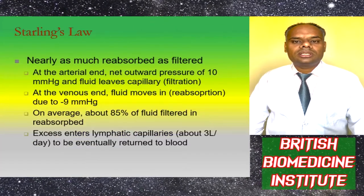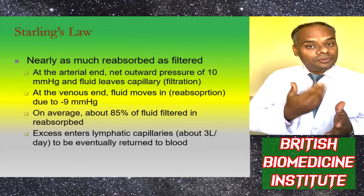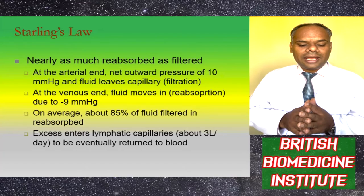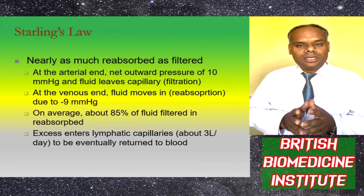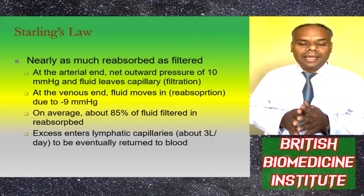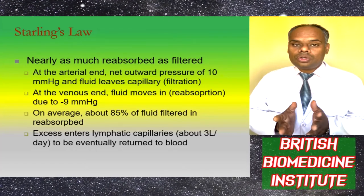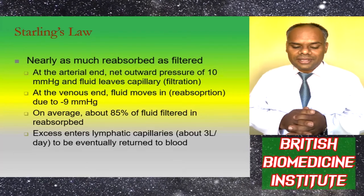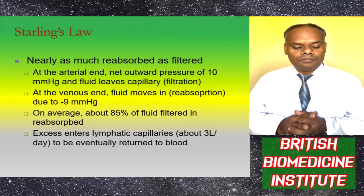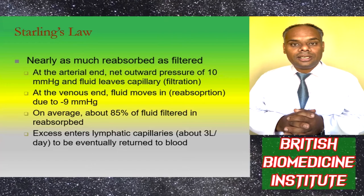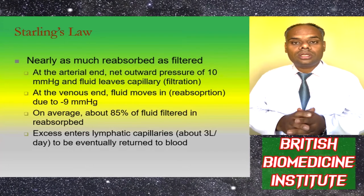Starling's law states that nearly as much fluid is reabsorbed as is filtered. At the arterial end, a net outward pressure of 10 mmHg causes fluid to leave the capillary via filtration. At the venous end, fluid moves in via reabsorption due to a net inward pressure of 9 mmHg. On average about 85% of filtered fluid is reabsorbed, and the excess — about 3 litres per day — enters lymphatic capillaries to eventually be returned to the blood.